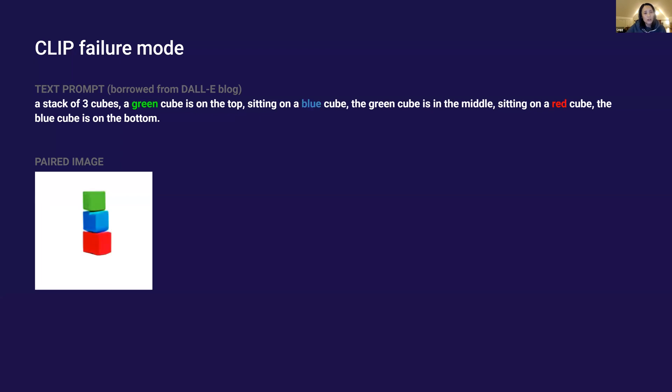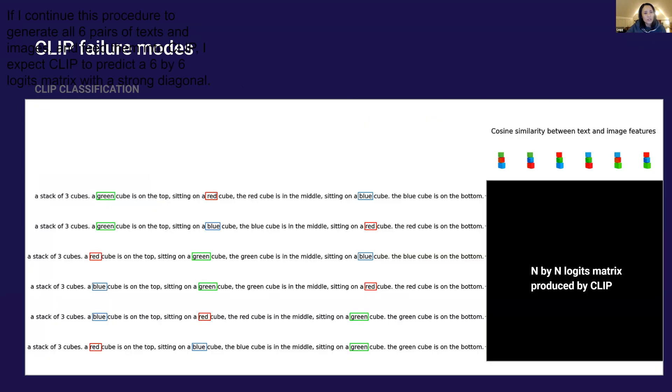If I shuffle the colors in both the image and the text, I get another pairing. If I continue this procedure to generate all six pairings of texts and images and feed them into CLIP, I'd expect CLIP to predict a six by six logits matrix with a strong diagonal.